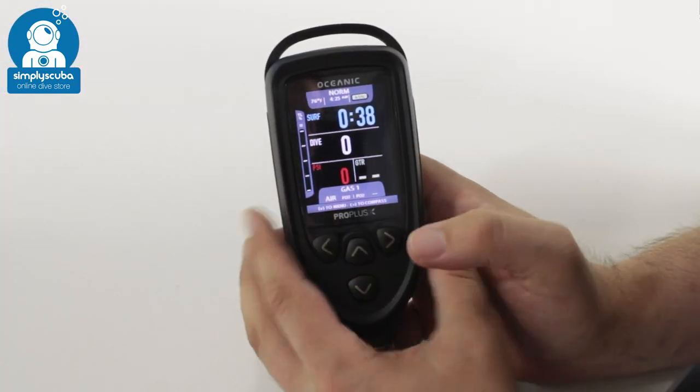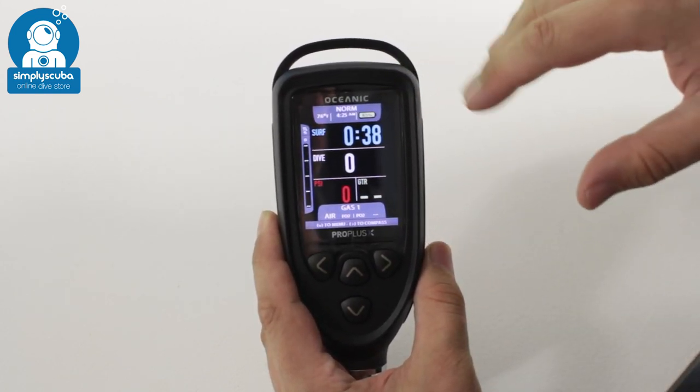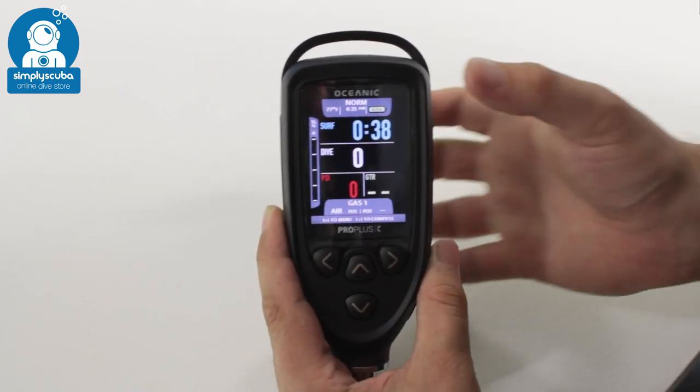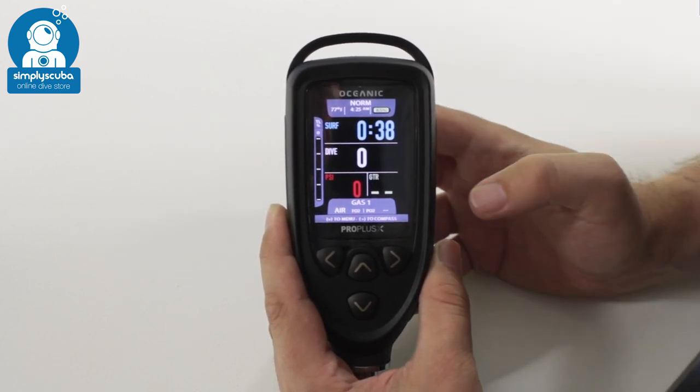Okay, so as you can see we have a full color screen. Everything's color coded. You can see right now that the air pressure level is red because it's not connected to anything, and then whites and greens are when everything is okay.